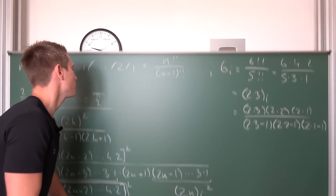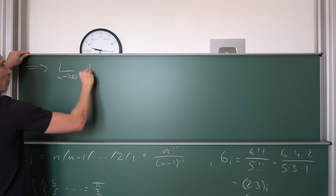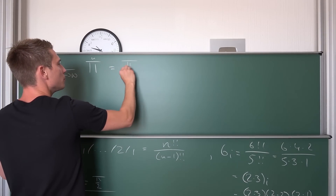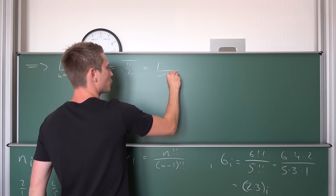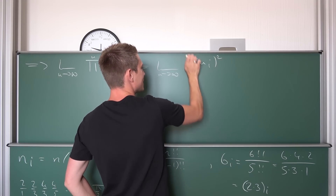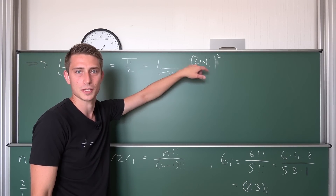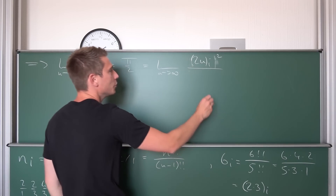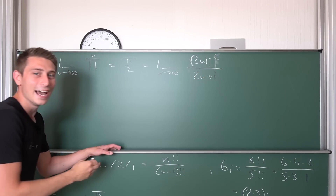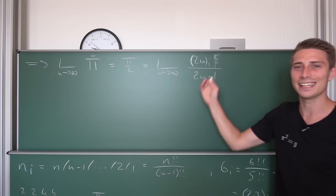Now we can take the limit as n approaches infinity. The limit of the partial products is pi over two — and this is nothing but the limit as n approaches infinity of (2n dividori) squared divided by (2n plus 1). This right here is the secret connection between the number pi and our dividori.